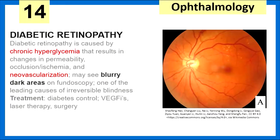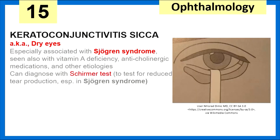Diabetic retinopathy is caused by chronic hyperglycemia that results in changes in permeability, occlusion, ischemia, and subsequent neovascularization. The patient may see blurry dark areas on fundoscopy. Treatment is with diabetes control, VEGF inhibitors, and if severe, laser therapy or surgery. Keratoconjunctivitis sicca — dry eyes — especially associated with Sjogren's syndrome, but also vitamin A deficiency and anticholinergic medications. We diagnose the Sjogren's-associated type with a Schirmer test, which shows reduced tear production.